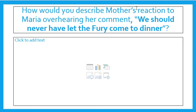How would you describe Mother's reaction to Maria overhearing her comment, 'We should never have let the Fury come to dinner'? Keep in mind that speaking out against the Fuhrer, or Hitler, was bad. Anybody caught doing that would be automatically sent to a concentration camp. You didn't know if your best friend was a Nazi spy or if they would turn you in. So think about how Mother reacts to Maria overhearing that comment.